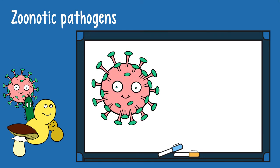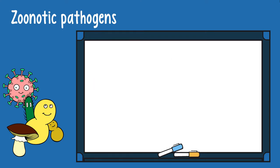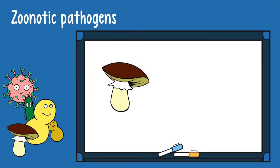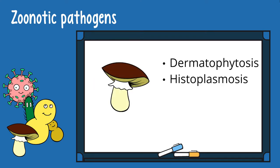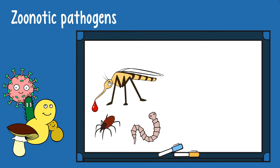Zoonotic viruses cause, for example, influenza, rabies, or COVID-19. Zoonotic fungi infect our skin, nails, or even hair, causing tongue-twisting diseases like dermatophytosis or histoplasmosis. And then there are zoonotic parasites — for example, malaria is caused by a parasite being transmitted via mosquitoes from animals to humans.